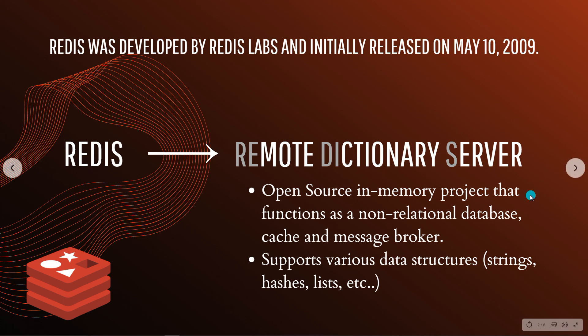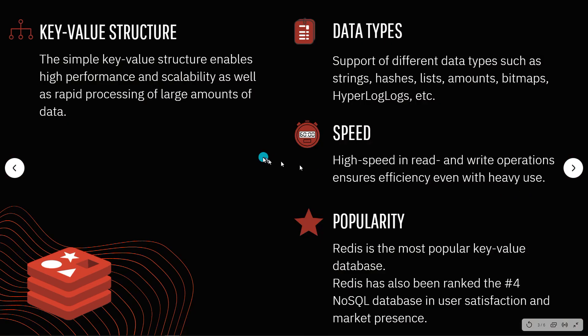The structure of the database in Redis is more of a key-value pair. This simple key-value structure enables high performance as well as rapid processing of large amounts of data. All data types you can think of are included: strings, hashes, lists, hyperloglogs, bitmaps, and all of that.